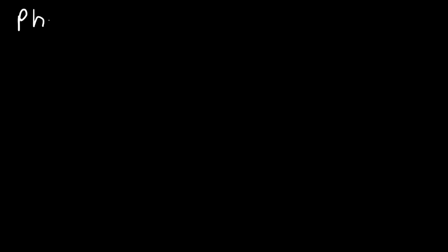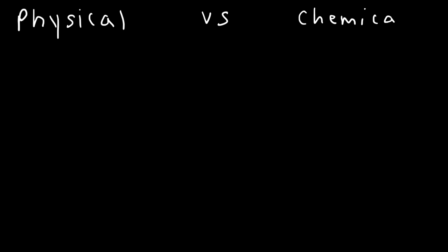In this video, we're going to talk about the difference between physical properties and chemical properties. When you think of properties, properties are characteristics. A physical property describes characteristics that do not change the chemical identity of the substance, whereas a chemical property describes a characteristic that will change the chemical identity of a substance.